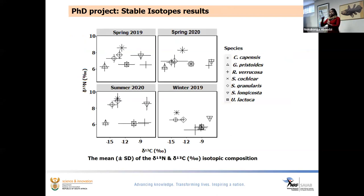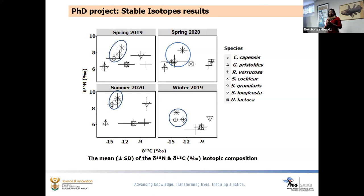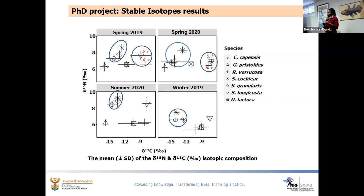Turning to stable isotope results: nitrogen isotope was enriched in limpet species relative to macroalgae, which is expected since animal tissues are typically more enriched in nitrogen than plants. Interestingly, Scutellastra longicosta and Ralfsia verrucosa were similarly enriched in carbon isotope in both spring seasons, confirming that Scutellastra does indeed prey on Ralfsia verrucosa.